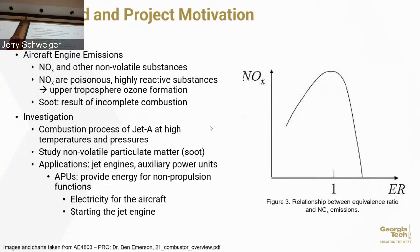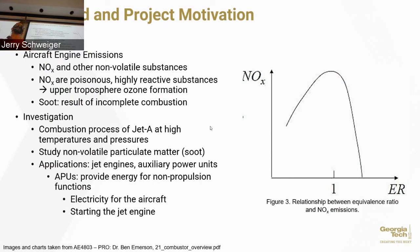This project specifically investigates particulate matter and emissions. Emissions from jet aircraft engines include NOx (nitrous oxides) and non-volatile substances — technical jargon for soot. NOx is poisonous and highly reactive; depending on where it is emitted, it can create ozone formation in the upper troposphere. Soot is a result of incomplete combustion — if we get an incomplete combustion process, we generate soot. We're looking at the combustion process of Jet-A fuel at high temperatures and pressures — common operating conditions for turbojets and turbofans — and studying non-volatile particulate matter output, with applications to both jet engines and auxiliary power units (APUs).